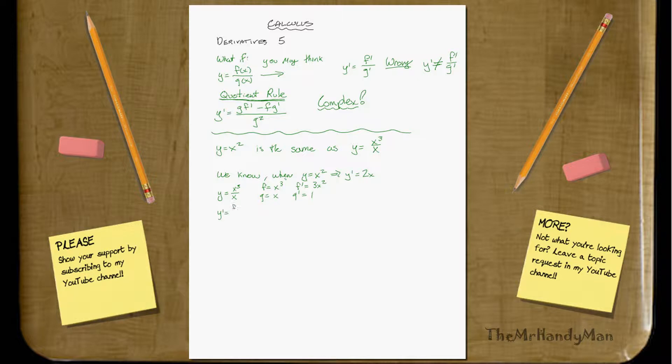Thus, y prime, if it equaled f prime over g prime, would equal, what's that? 3x squared over 1, which is 3x squared, which is not equal to 2x. So realize that your technique is not equal to 2x. So that technique that you were thinking about is incorrect.